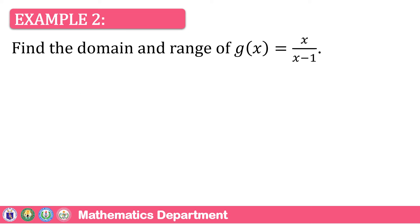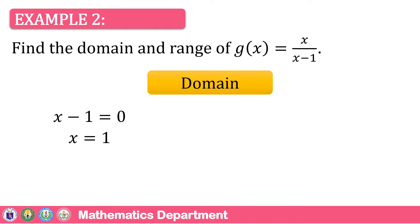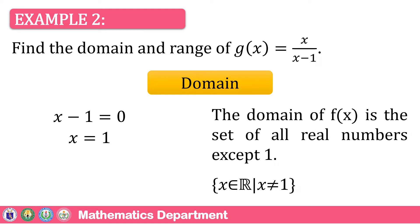Example number 2: find the domain and range of g(x) = x / (x − 1). Let us find the domain. In this example, the rational function has a binomial in the denominator. So the first step is to equate the denominator: x − 1 = 0. When we transpose negative 1 to the other side, it becomes positive. Therefore, x = 1. So the domain of g(x) is the set of all real numbers except 1. In symbol: x is an element of all real numbers such that x ≠ 1.